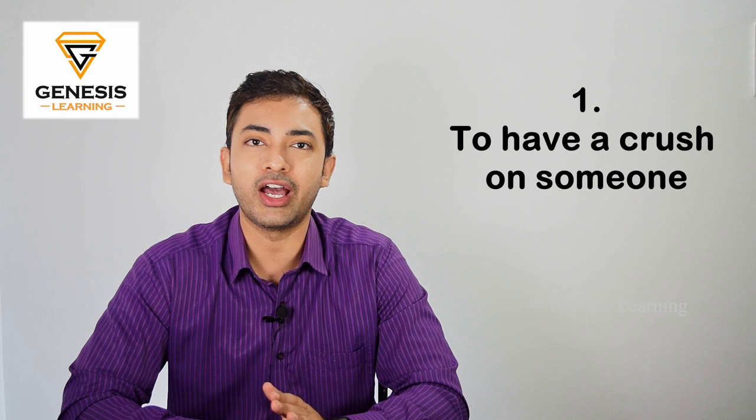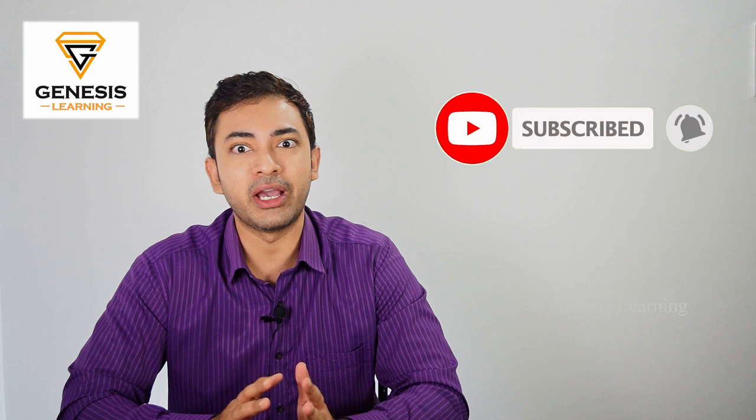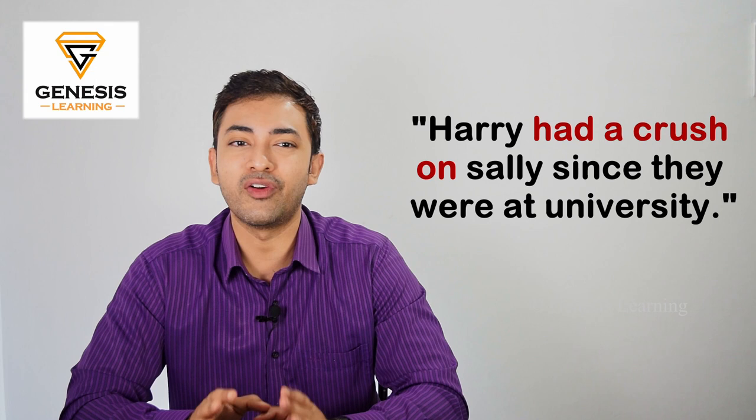All right, so here we go. The first phrase is to have a crush on someone. This is basically an idiomatic expression that describes some kind of romantic infatuation. A simple example sentence that you can use is, say for example, Harry had a crush on Sally since they were at university. So if you have a liking towards someone or you know someone who has a liking for someone, then you can say he has a crush on her or she has a crush on him.